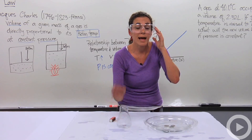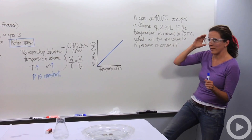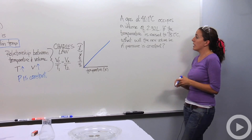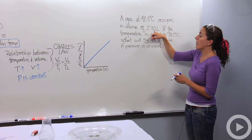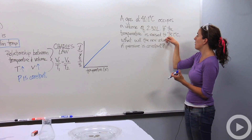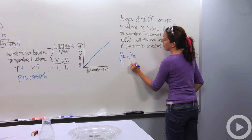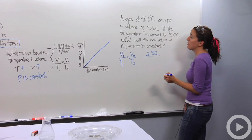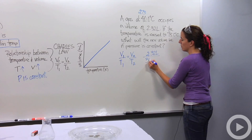Let's do a problem you might see in class. A gas at 40 degrees Celsius occupies a volume of 2.32 liters. If the temperature is raised to 75 degrees Celsius, what will the new volume be if the pressure is constant? I'm dealing with temperature and volume, so I know that's Charles' Law. Charles' Law deals with temperature and volume, and temperature must be in Kelvin. Using the formula V1 over T1 equals V2 over T2, the first volume is 2.32 liters. The first temperature is 40 degrees Celsius; adding 273 gives 313 Kelvin.